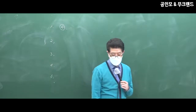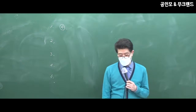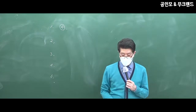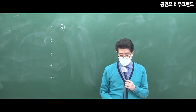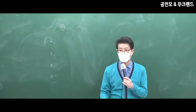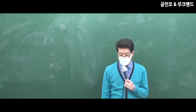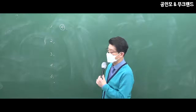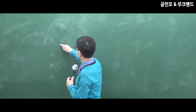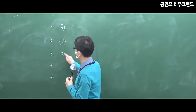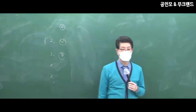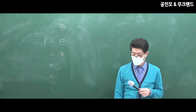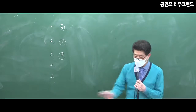그 다음 세 번째, 취득 당시 실지거래가액을 확인할 수 없는 경우의 순서는 매감한기입니다. 답은 3번이에요. 순서가 바뀌었잖아요. 매감한기 순서가 바뀐 거예요.